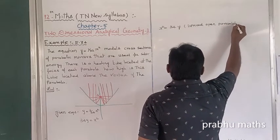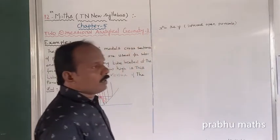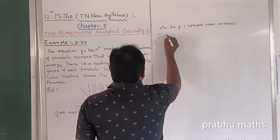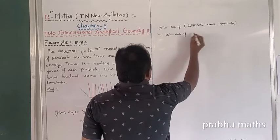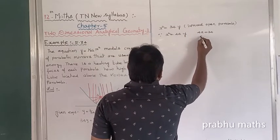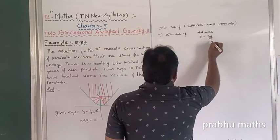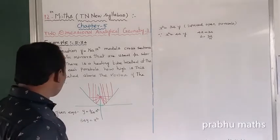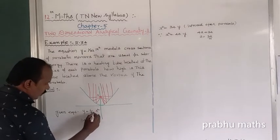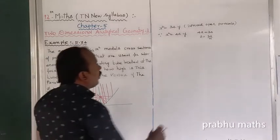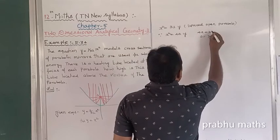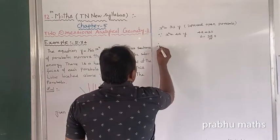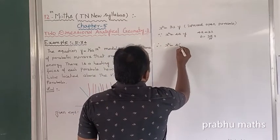Comparing with the general form x square is equal to 4a into y: 4a is equal to 32. Solving for a: a is equal to 32 divided by 4, which is equal to 8. Therefore x square is equal to 4 times 8 into y.